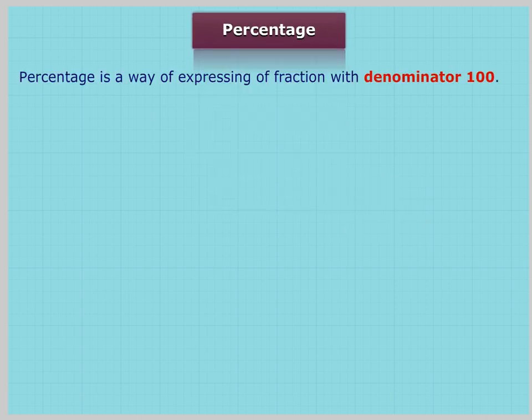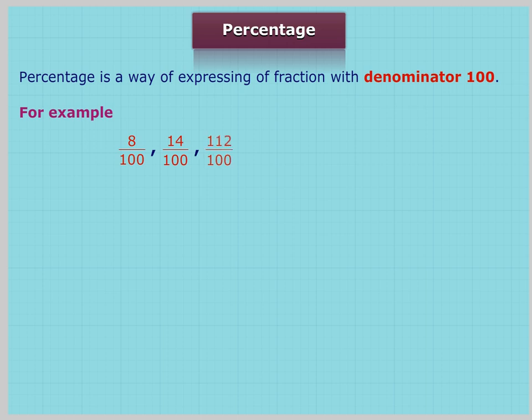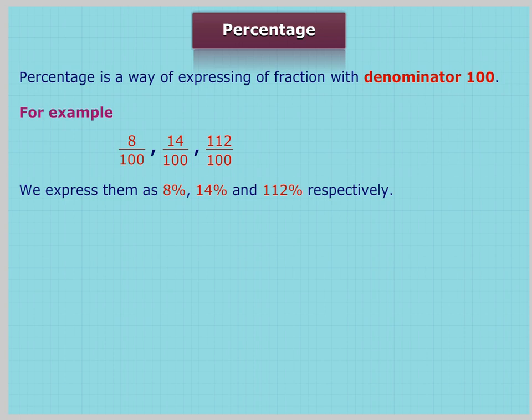Percentage: Percentage is a way of expressing a fraction with denominator 100. For example, 8 upon 100, 14 upon 100, 112 upon 100 — we express them as 8%, 14%, and 112% respectively. Here, percent means per hundred.